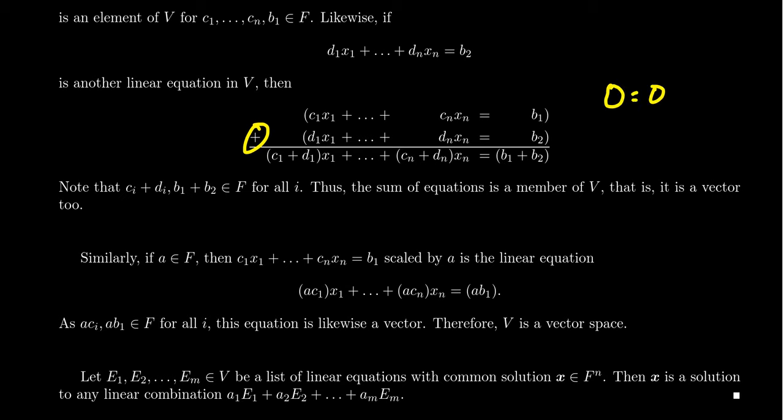You can show that this equation addition is commutative, it's associative, there's a zero equation (zero equals zero) that if you add doesn't change the equation. You could have the inverse equation times everything by negative one. Scalar addition will distribute over equation addition. If you times an equation by one you get the same equation again. So those axioms of vector space are satisfied by these definitions here.